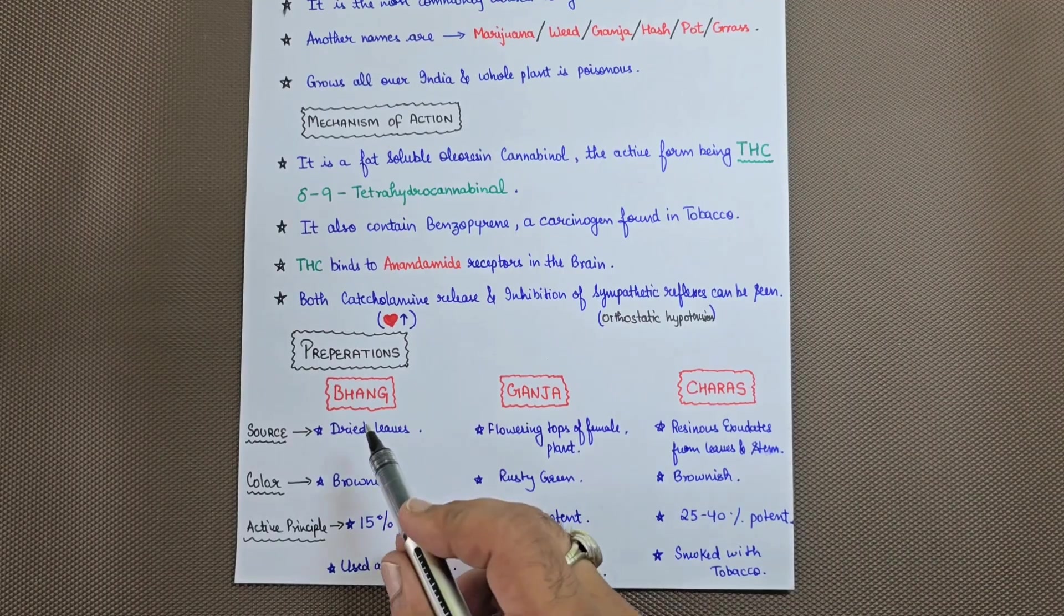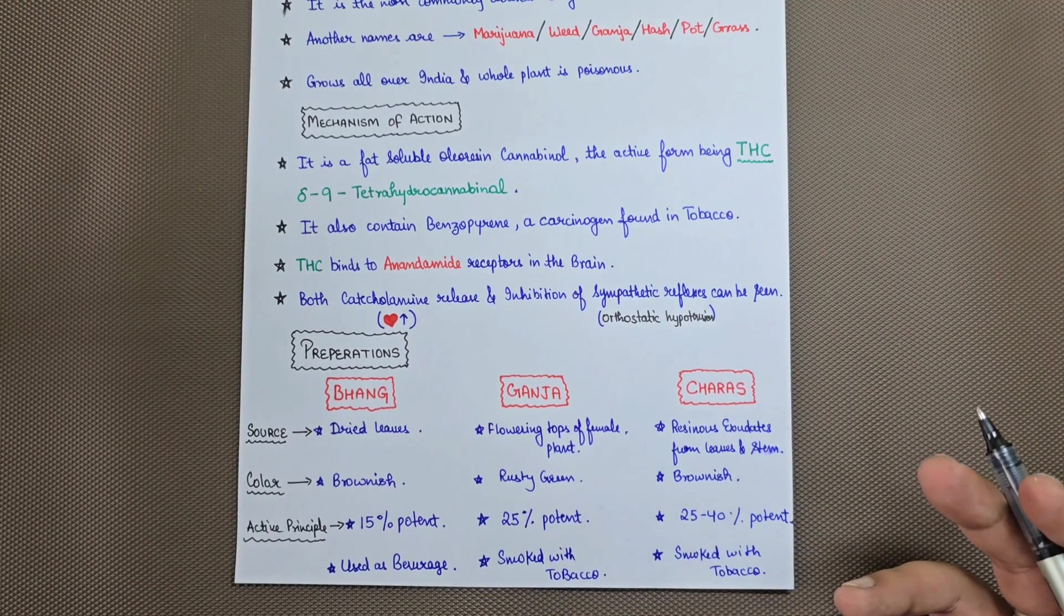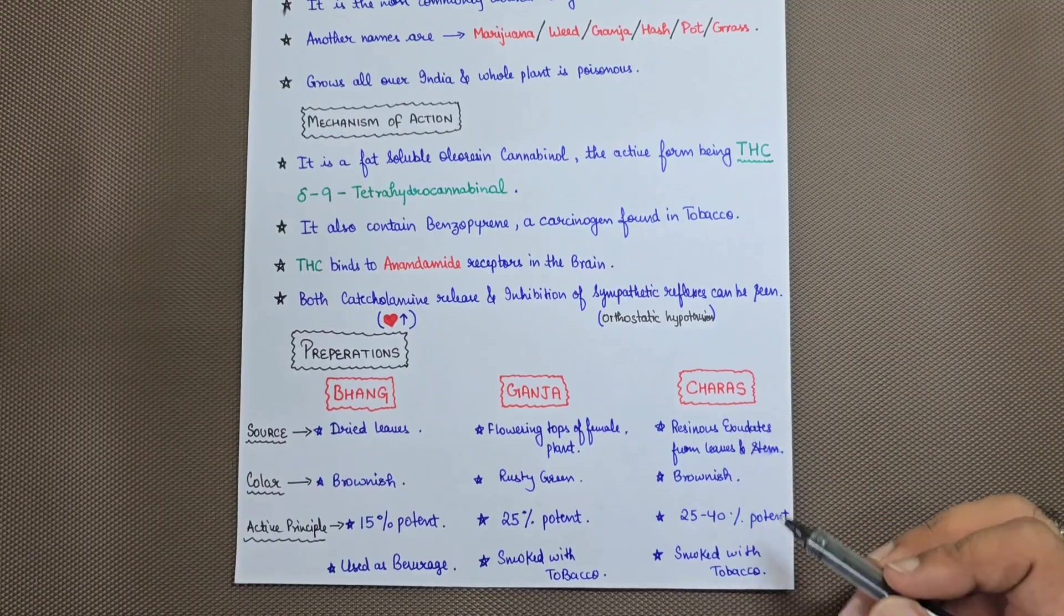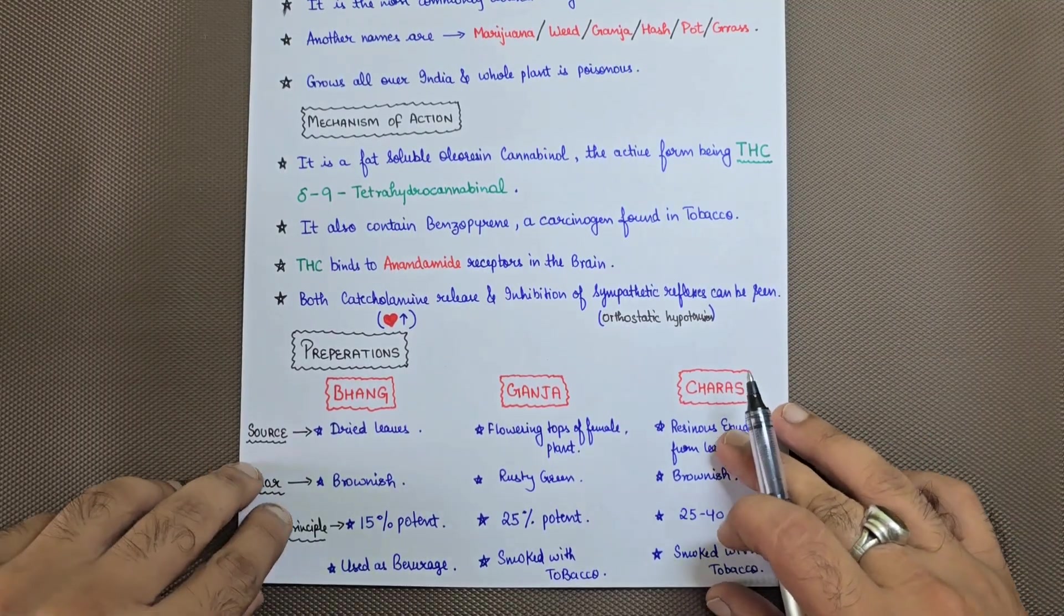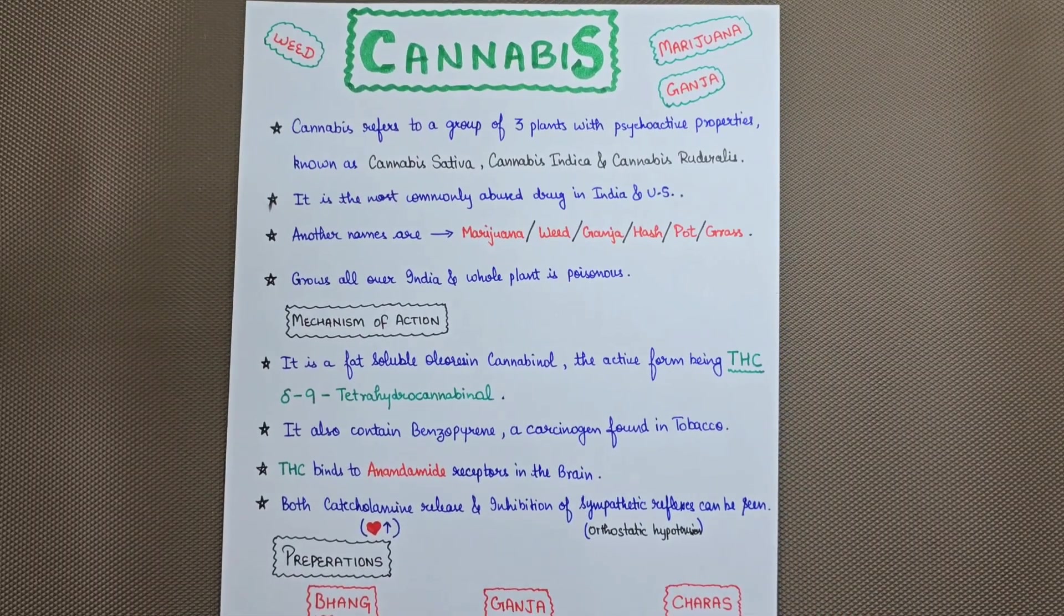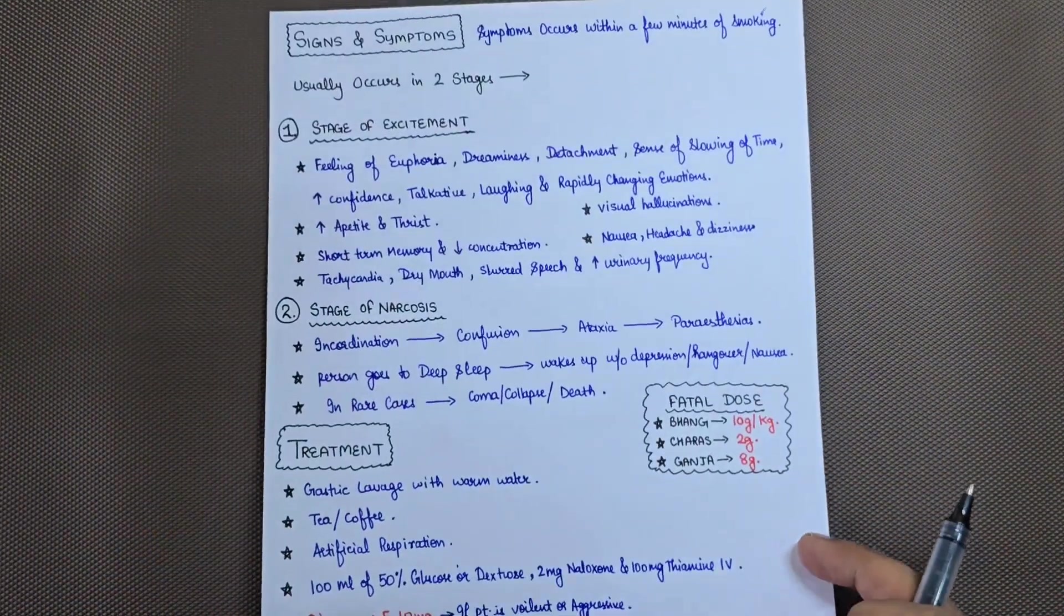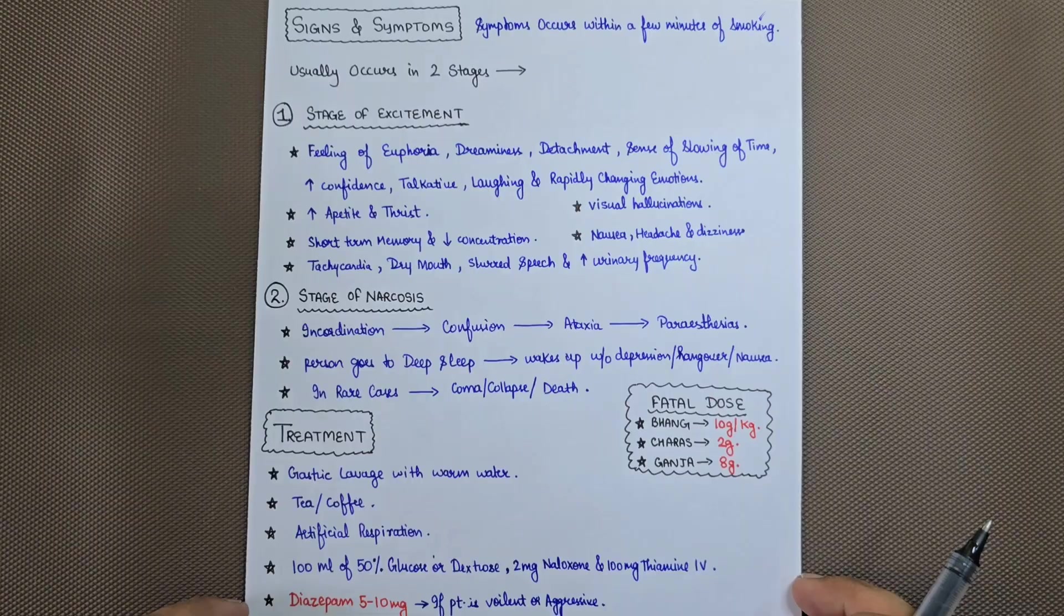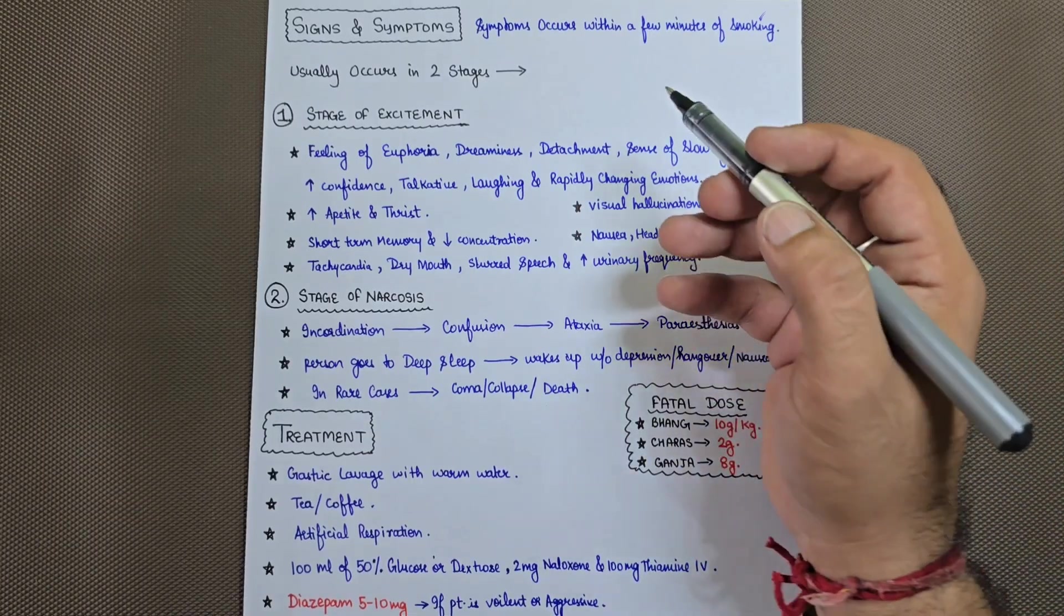It is used as a beverage, usually in festivals in India, while ganja is smoked with tobacco and charas is also smoked with tobacco. This is the basic overview of cannabis, weed, marijuana, or ganja. Now if a person comes to your hospital complaining that he has consumed cannabis, what are the symptoms?